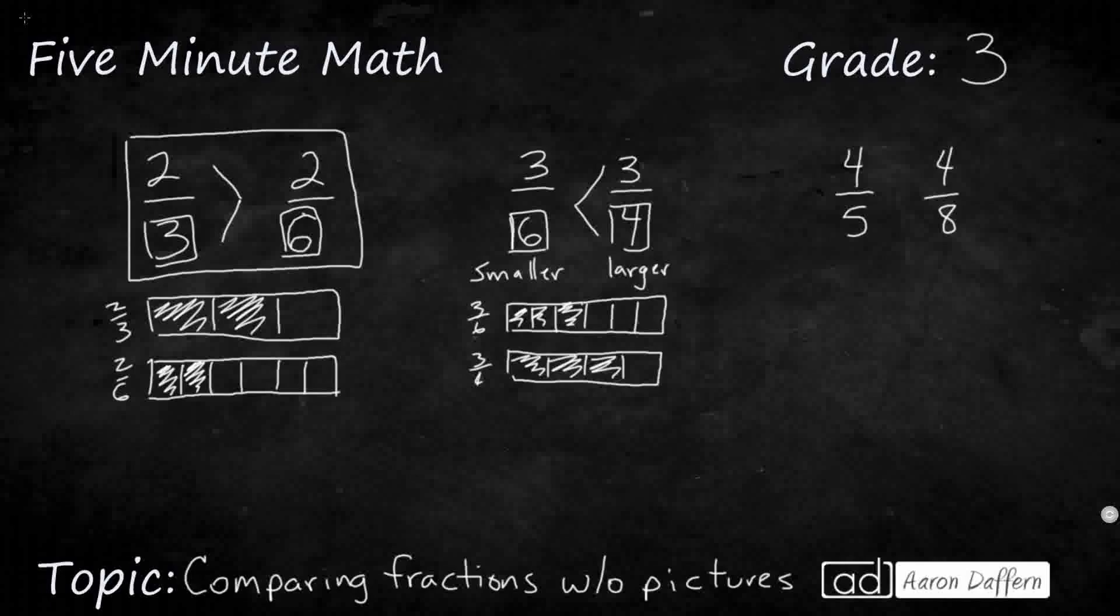Same thing with this. 4-5ths and 4-8ths. We have the same numerator, so we're just looking at the denominator. And I'm looking at the 5, and I'm looking at the 8. And the 5 is going to be a smaller number. I'm going to take that whole and break it up into 5 pieces.